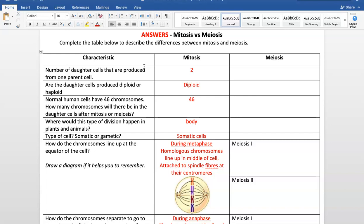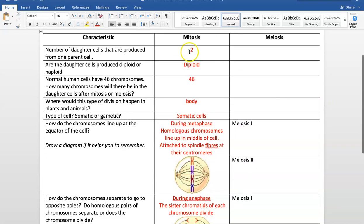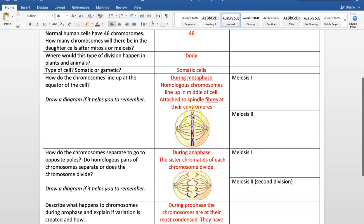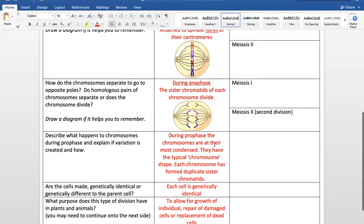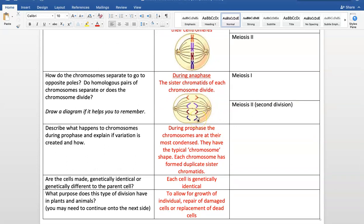So here we have the number of daughter cells that are produced from one parent cell in mitosis. That's two. Other daughter cells produced are diploid or haploid. We know that they also have 46 chromosomes. So that must be a diploid set. Normal human chromosomes have 46 chromosomes. So how many chromosomes will there be in the daughter cells? We've just discovered it's 46. Where will this happen? Usually in the body or if it's in a plant, it might happen in the meristem of the plant, the growth part of the plant. Type of cell, we know that's happening in somatic cells. And how do the chromosomes line up at the equator of the cell? We know it's the spindle fibers that are holding those chromosomes in place. And then how do the chromosomes separate? They separate because the centromere starts to be pulled away by each spindle fiber. Describing what happens to chromosomes during prophase. We know in prophase those chromosomes are at their most condensed. They have that typical chromosomal shape and they form those duplicate sister chromatids.